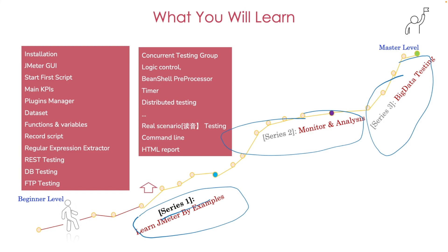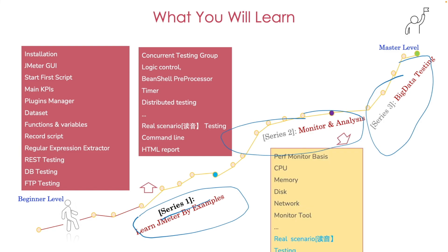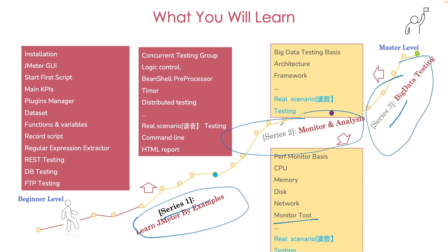In Series 2, let's quickly learn how to set up monitors and how to get back-end metrics from the back-end server. I recommend a simple tool so we can use it to set up monitors and get back-end KPIs automatically. And in Series 3, let's talk about big data testing. With the current popular framework and architecture, you can implement your big data testing quickly.